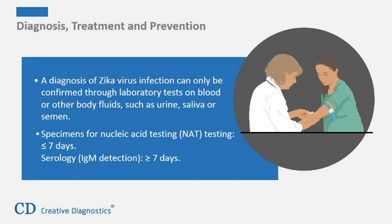A diagnosis of Zika virus infection can only be confirmed through laboratory tests on blood or other body fluids, such as urine, saliva, or semen. Specimens for nucleic acid testing include whole blood and serum collected in a dry tube and/or urine collected from patients presenting with onset of symptoms less than or equal to 7 days. For serology IgM detection, whole blood collected in a dry tube and serum collected from patients presenting with onset of symptoms greater than or equal to 7 days is used. Wherever possible, paired serum specimens should be collected at least 2–3 weeks apart, ideally with the first serum specimen collected during the first 5 days of illness.